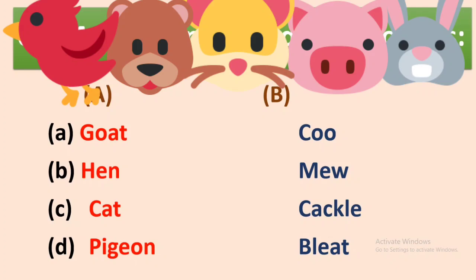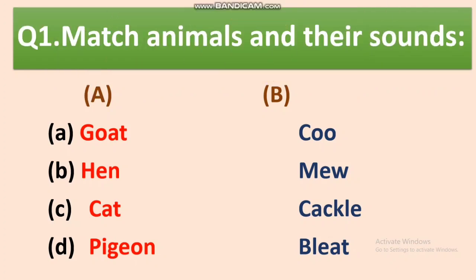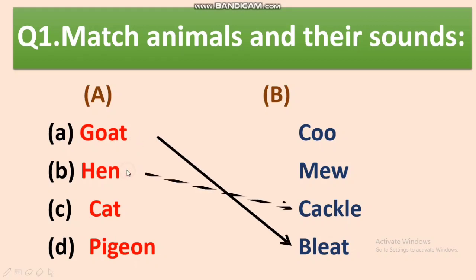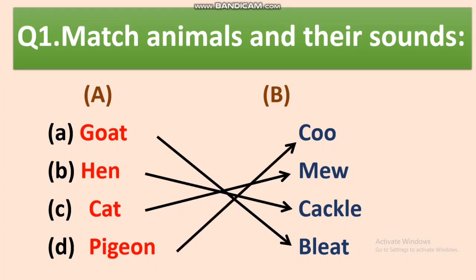Our first question is: match animals and their sounds. We are given animals on one side and the sounds on the other side. Let's match them. Goat — bleat. Then we have hen — cackle. Cat — meow, yes you all know. Then we have pigeon — coo. These are the sounds which these four animals make.